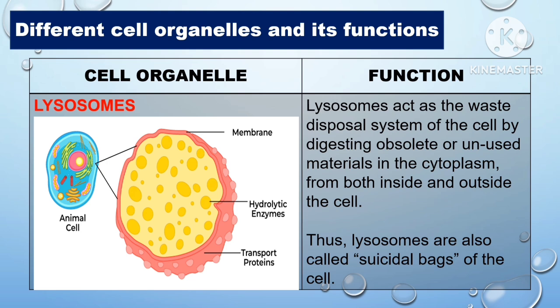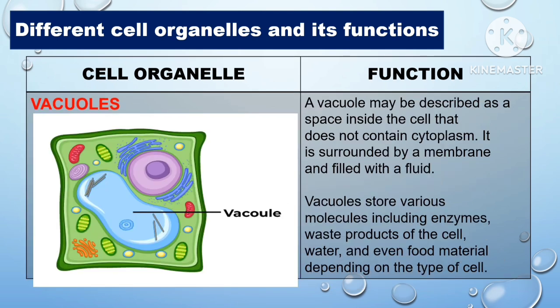Another cell organelle is the lysosome. Lysosomes act as the waste disposal system of the cell by digesting obsolete or unused materials in the cytoplasm, from both inside and outside of the cell. Thus, lysosomes are also called the suicidal bags of the cell. Another organelle is the vacuole, which may be described as a space inside the cell that does not contain cytoplasm. It is surrounded by a membrane and filled with fluid, and stores various molecules including enzymes, waste products, water, and food material depending on the type of cell.